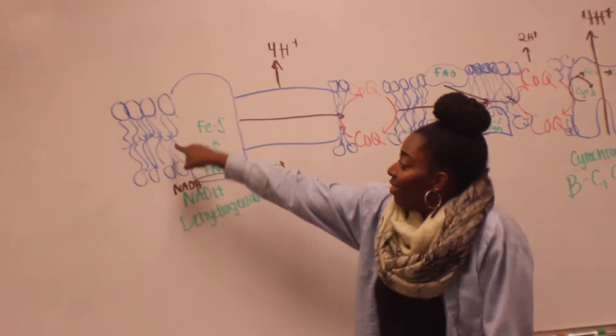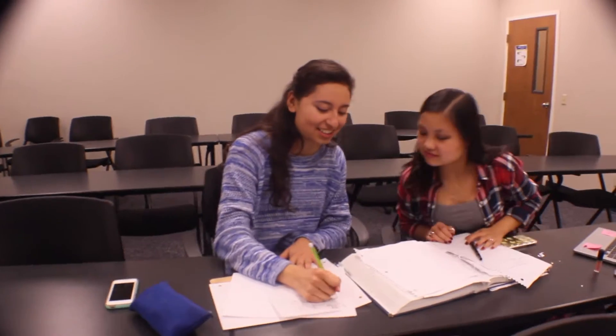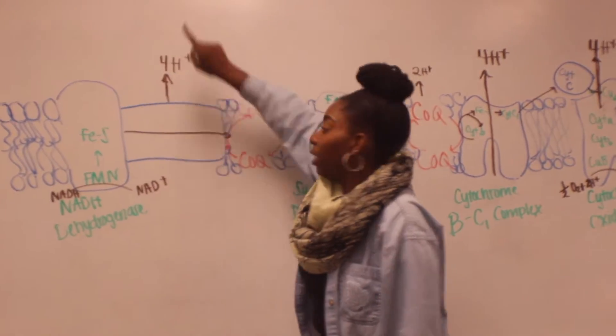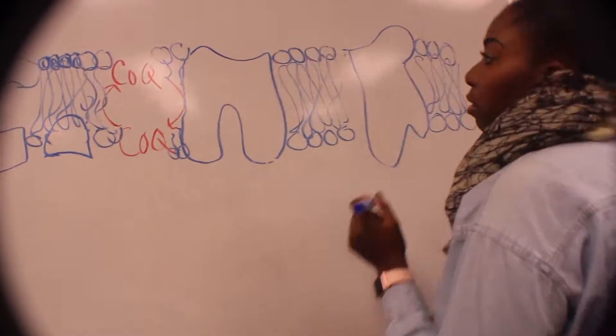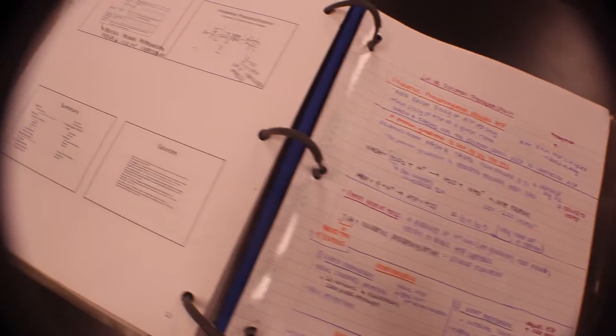Now we get to the membrane where complex one does its thing. NADH-Q oxidoreductase is a combo of the two pumping four protons to the intermembrane space. Two electrons transfer to FMN prosthetic group. Then there's iron sulfur clusters sliding them to the Q pool.